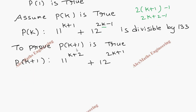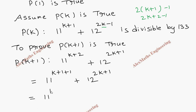To prove P(k+1) is true, we take this term and split it. We write 11^(k+2) as 11^(k+1) × 11^1, and 12^(2k+1) is written as it is. So the expression becomes 11^(k+1) × 11 + 12^(2k+1).